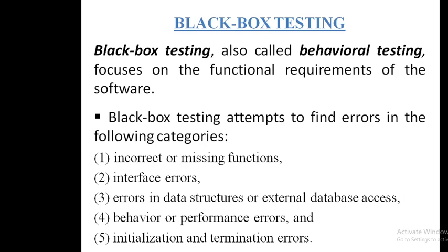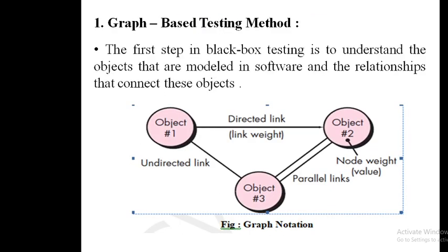One of the important concepts in black box testing is the graph-based testing method. The first step in black box testing is to understand the objects modeled in the software and the relationships that connect those objects — understanding what objects are used and how they are related to each other.